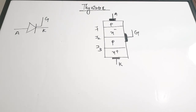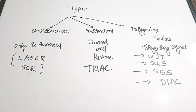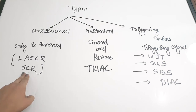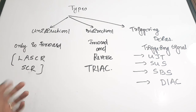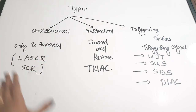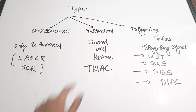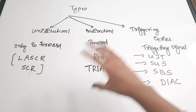There are basically three types of thyristors: unidirectional, bidirectional, and triggering devices. Unidirectional thyristors conduct only in the forward direction. Examples are the basic SCR and the LASCR — Light Activated Silicon Controlled Rectifier. Bidirectional thyristors conduct in both forward and reverse directions. The example is the TRIAC, which stands for Triode AC Switch.